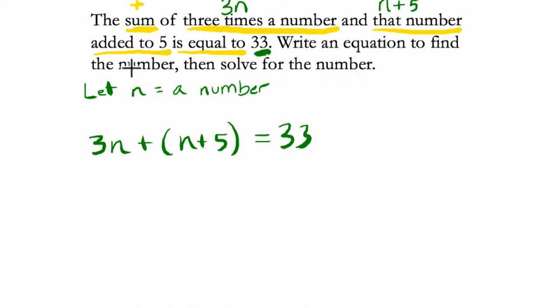Write an equation, define the number - great, we did that already. Then solve for the number. Since we're adding one group of n plus 5, we don't need our parentheses. There's nothing to distribute. You could distribute the one - one times n is one n, and one times 5 is five - but there's no need to write that step out.